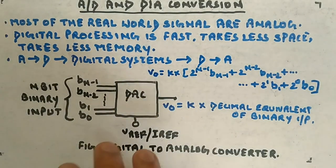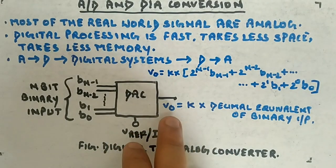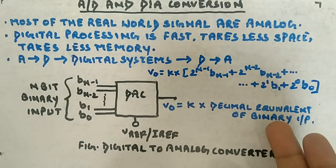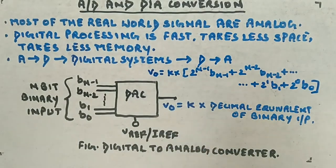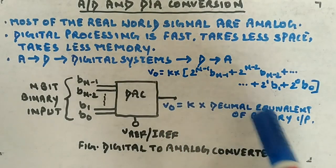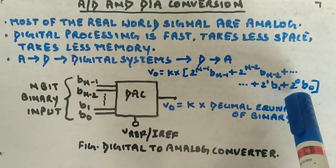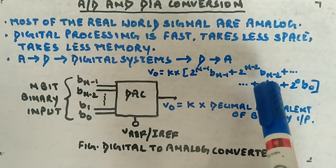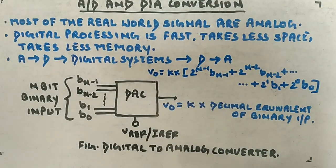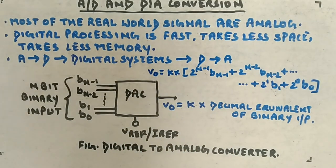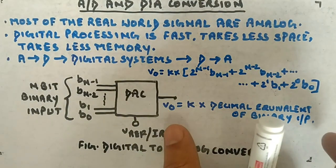The output voltage format is: Vout = K × (decimal equivalent of binary input). Whatever binary input you apply, convert it to decimal and multiply by a proportional constant K to get the output voltage. Expanded, this is K multiplied by the sum of each bit value — b0 × 2^0, b1 × 2^1, and so on up to b(n−1) × 2^(n−1). That's how you get the analog equivalent of the binary input.